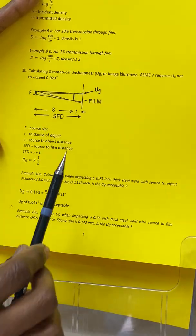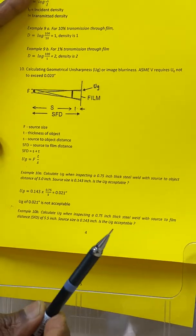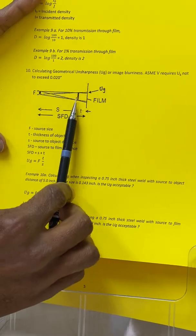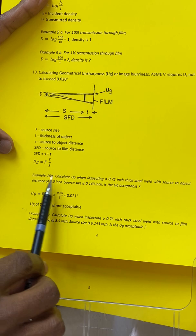If you want to make the shadow or the image sharper, the only way you can do it is to adjust the source to object distance. That can be figured out from this formula.